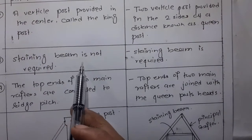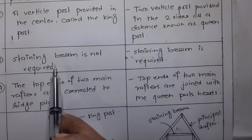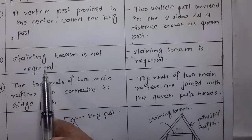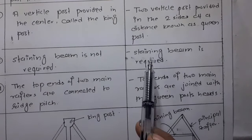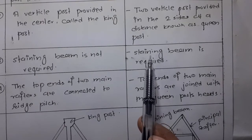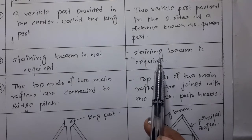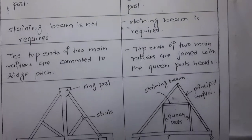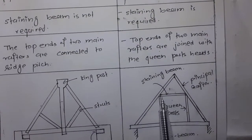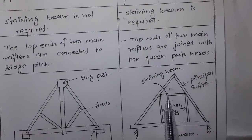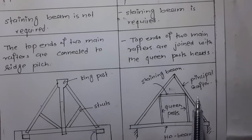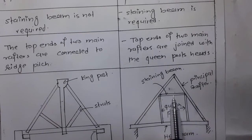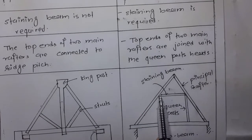A straining beam is not required in the case of king post truss. In the case of queen post truss, there is a requirement of a straining beam. The straining beam is a horizontal member which connects the heads of the queen posts.